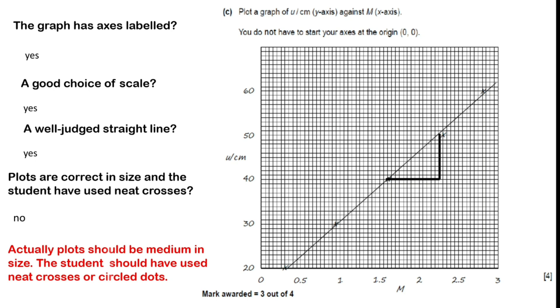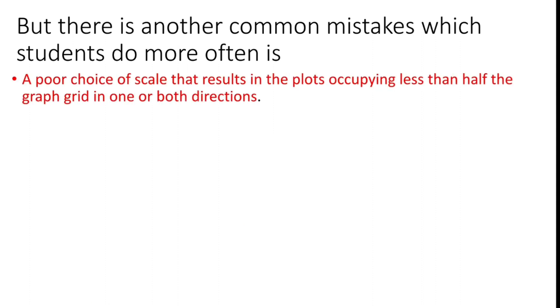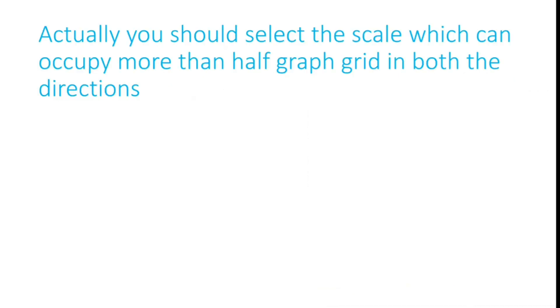But there is another common mistake which students do more often: a poor choice of scale that results in the plots occupying less than half the graph grid in one or both directions. Look at this graph. The graph is just in a corner. Actually it's supposed to be more than half of the graph paper. You should select a scale which can occupy more than half graph grid in both directions.